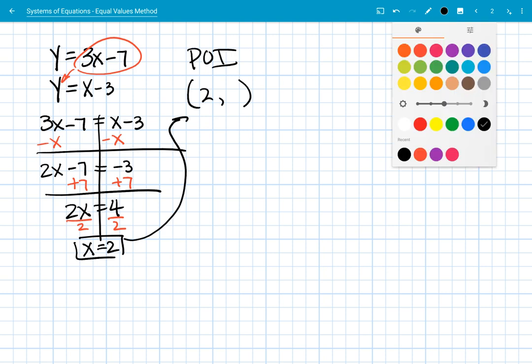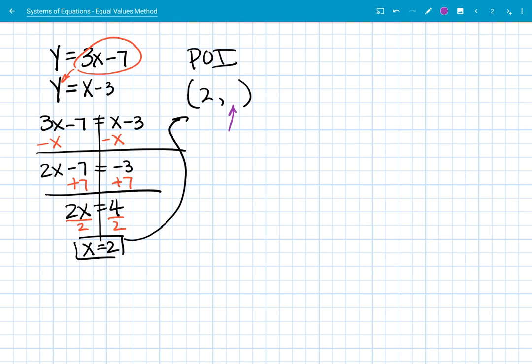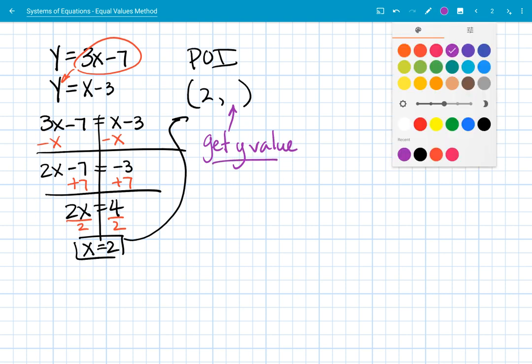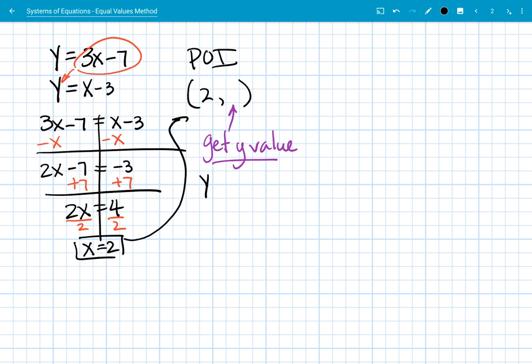Alright, so we need to get this y value. So I will use, I think, the bottom equation. y equals whatever x is minus 3. And we said that the x was 2. 2 minus 3, negative 1. So according to that equation, the y value is negative 1.